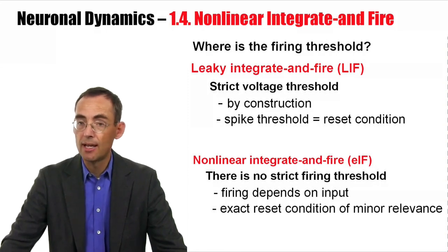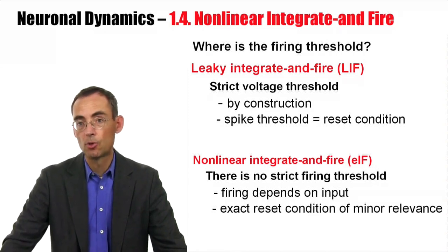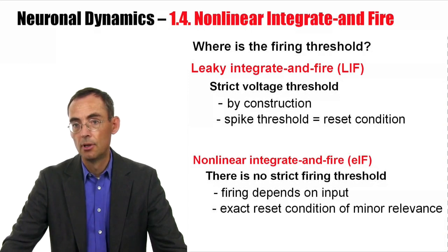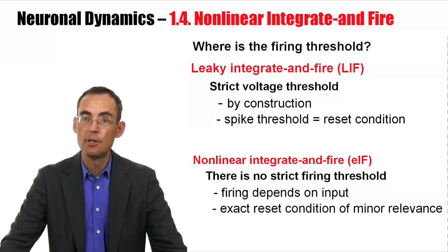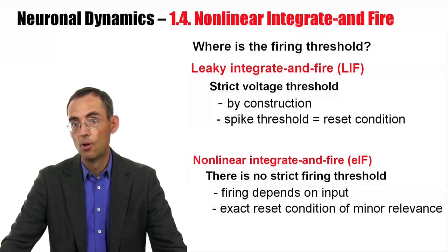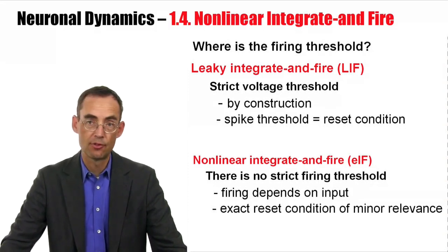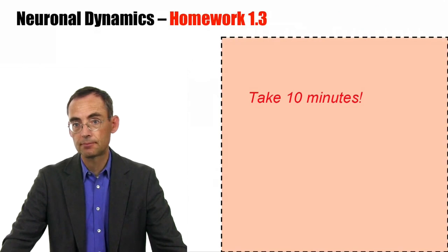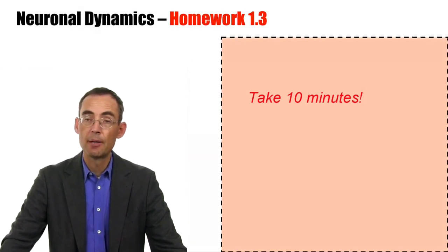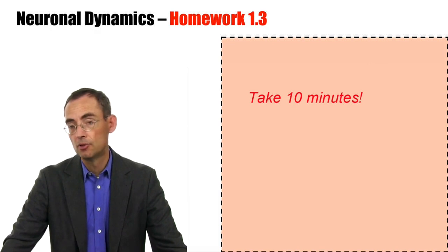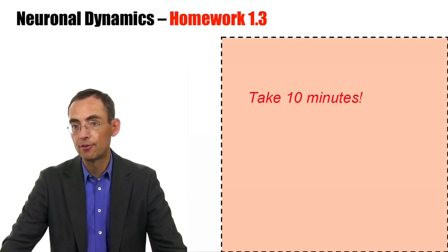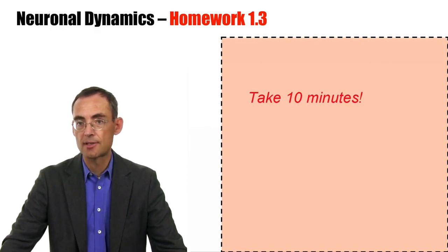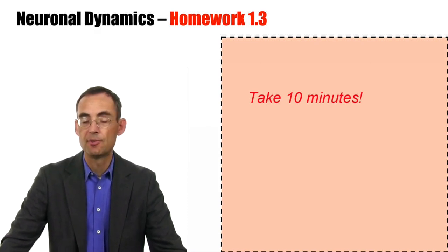If in this class we often talk about a threshold, this is indeed a simplification. Real neurons will have a different threshold under pulse injection, constant current injection, and yet a different threshold under a slow current ramp. I invite you to spend some time with the exercises that should trigger some thinking about the different versions of non-linear neuron models. Please spend five to ten minutes with the exercises and then move on to the last part of this week's lecture.